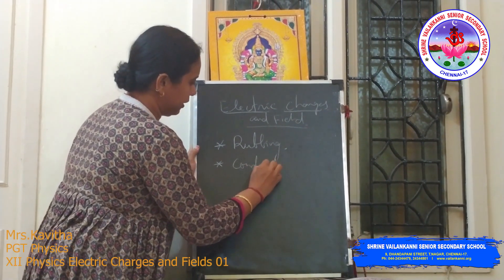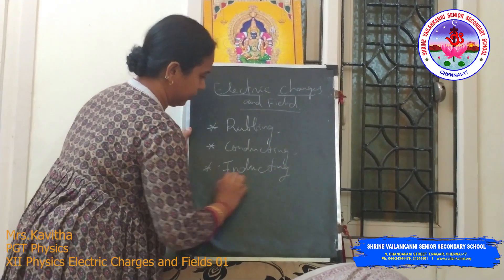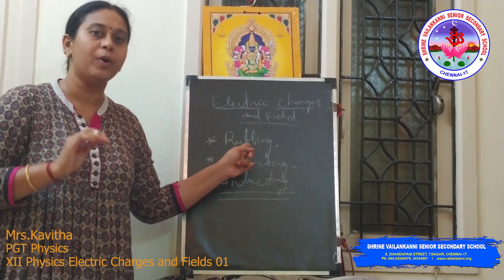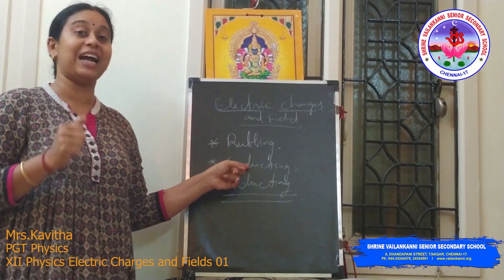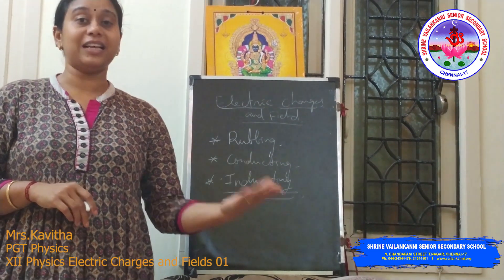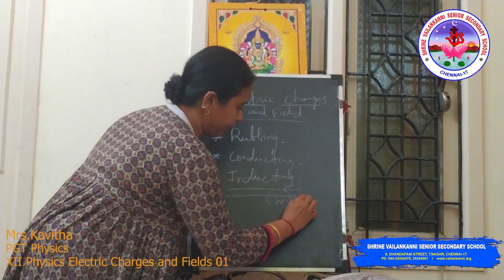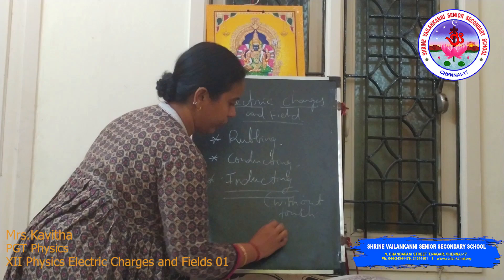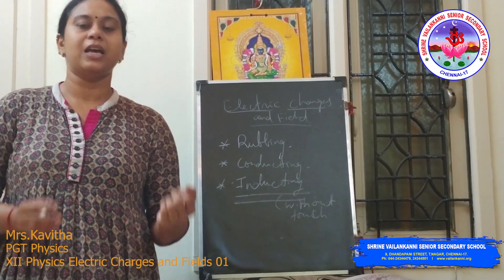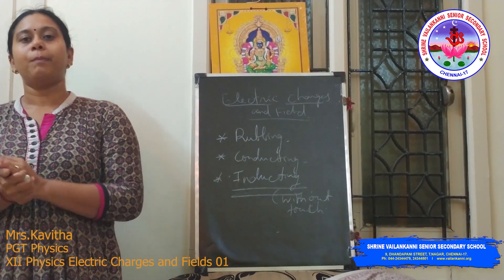The first method is friction — rubbing one object over another. The second is conduction — touching the object to another body so charge transfers by contact. The third is induction — without touching. When a charged object is kept near another object, it induces charge in that object. The charge is inducted without direct contact.